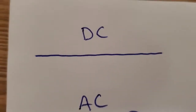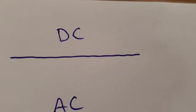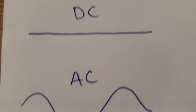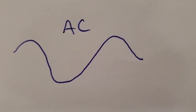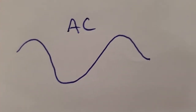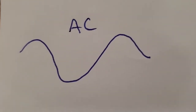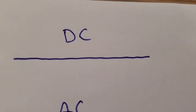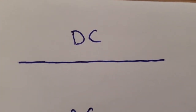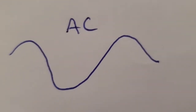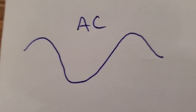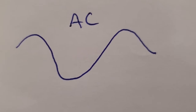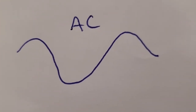It starts with electrical current. You might have heard of AC and DC current. DC is basically electrons flowing in one direction, from negative to positive. AC, alternating current, means the electrons are going back and forth. If you were to measure the voltage of direct current, it would be a flat line. The sine wave represents alternating current — it goes up and down as the flow of electrons moves back and forth.